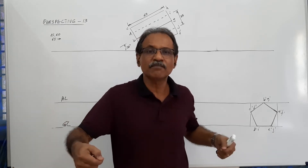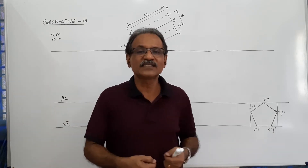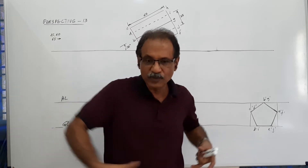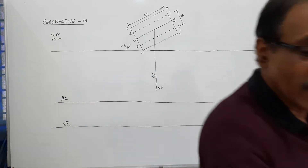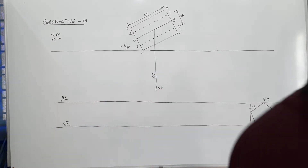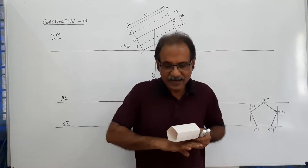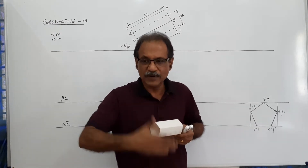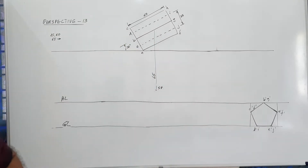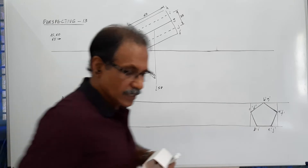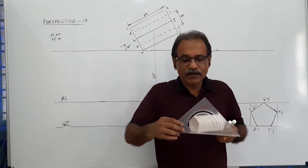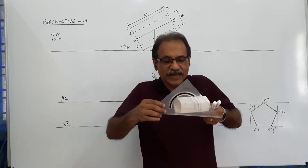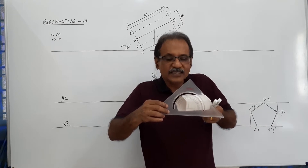The axis of the prism makes 30 degrees to PP. What does it mean? It means it's lying like this. This is the picture plane. A corner is touching the picture plane. This is how it lies.